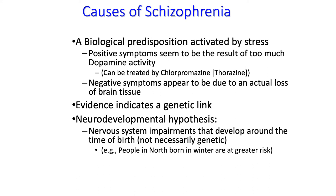There is evidence for a strong genetic link in schizophrenia. If you have relatives who are schizophrenic — cousins, uncles, parents, grandparents — your probability of developing the disorder is higher than if you had no genetic relatives who have shown schizophrenic behavior in the past.